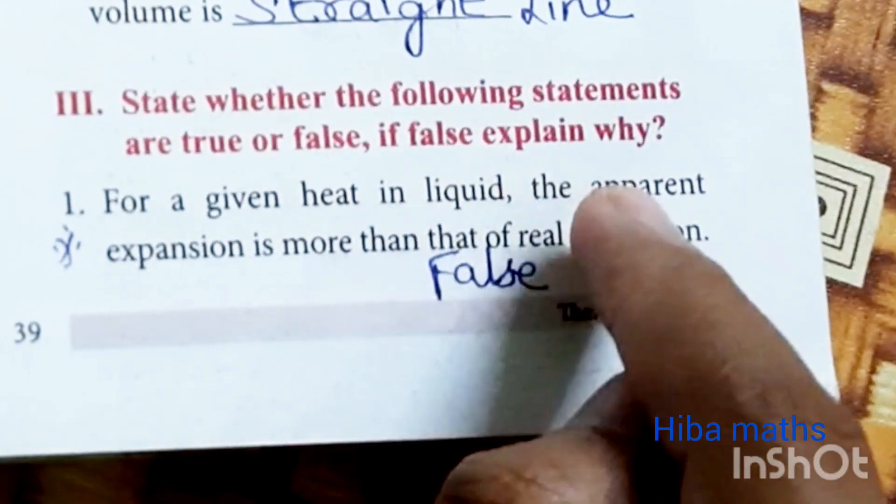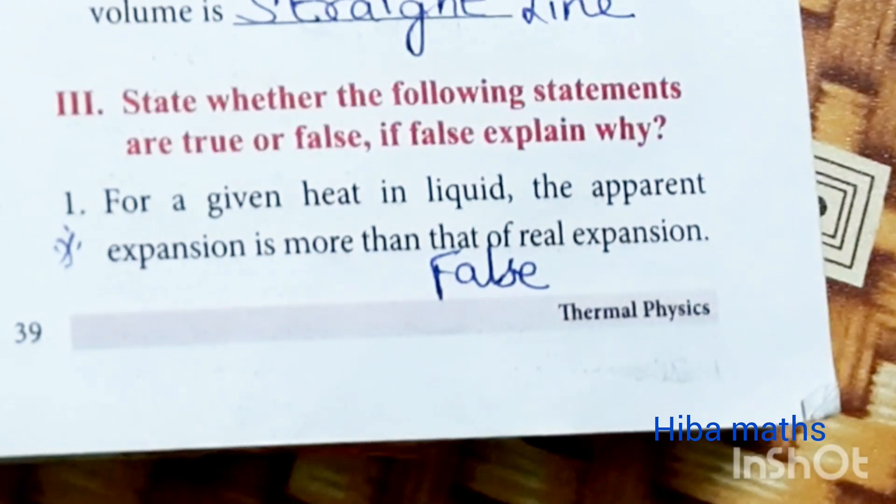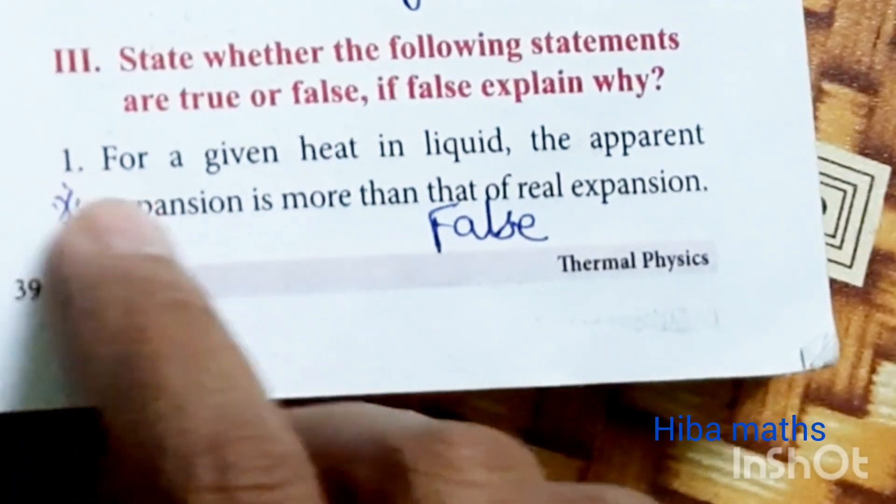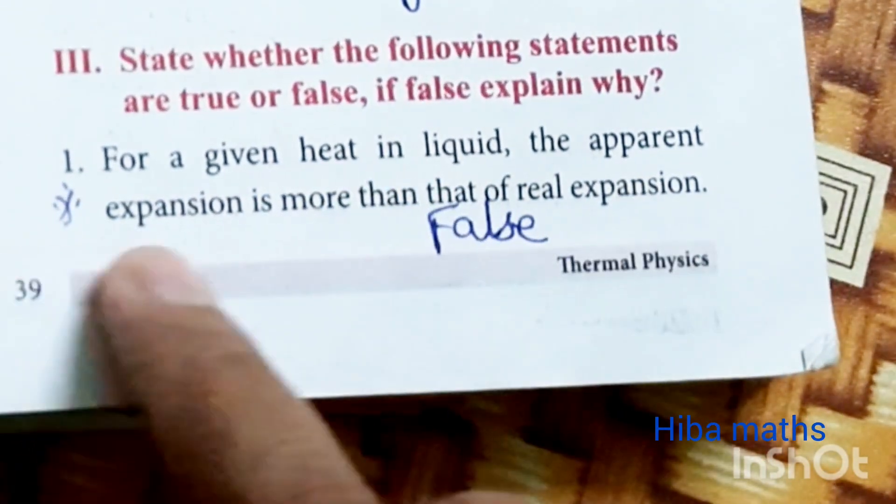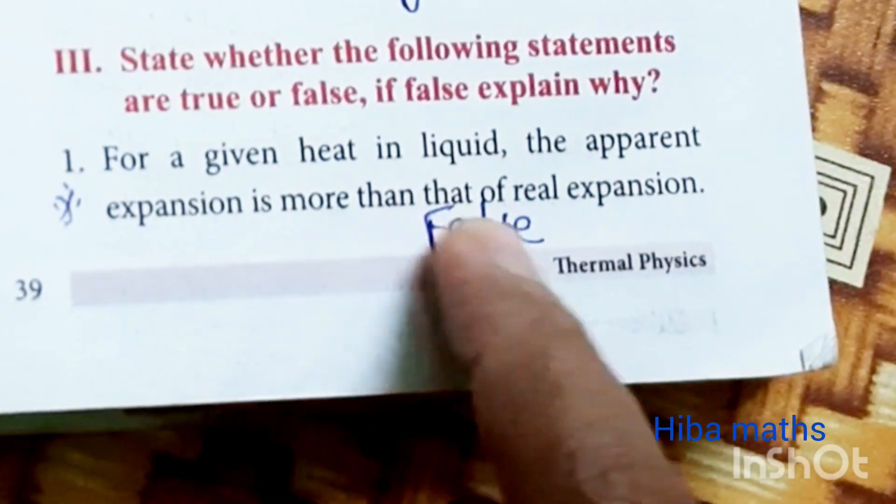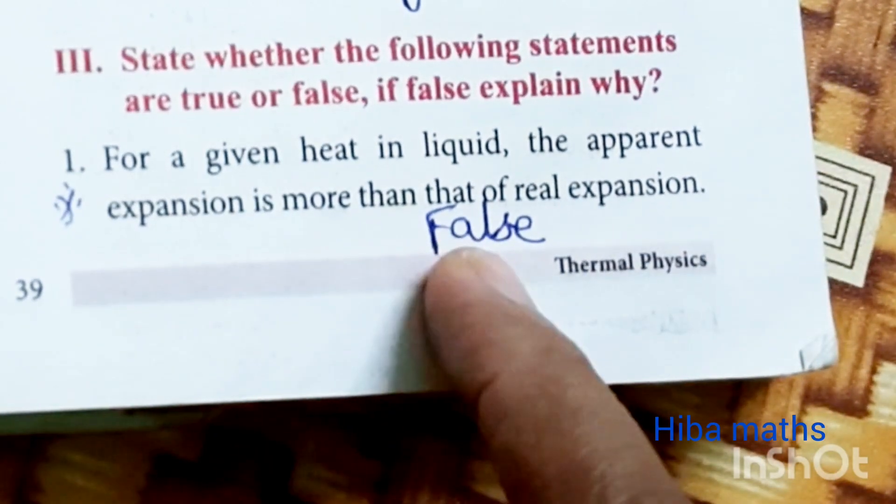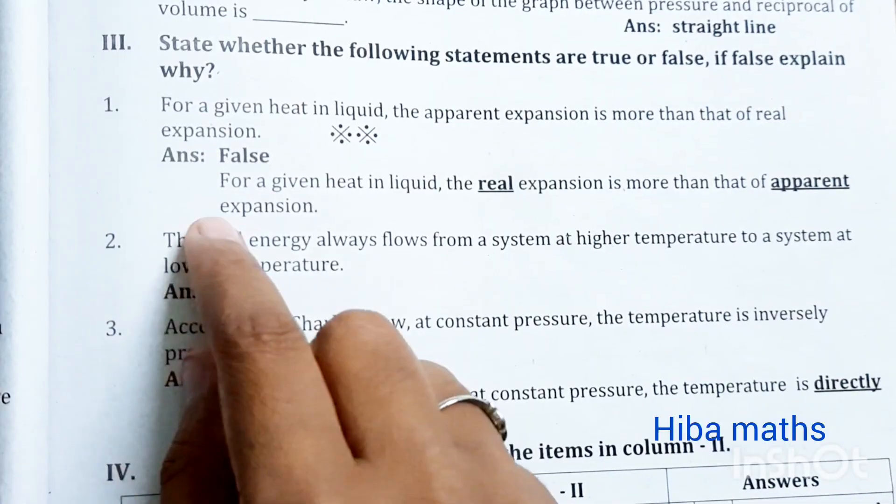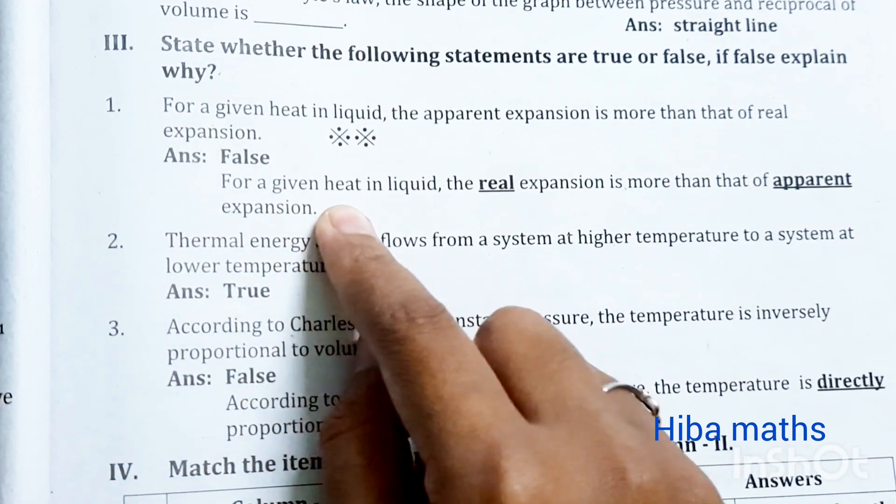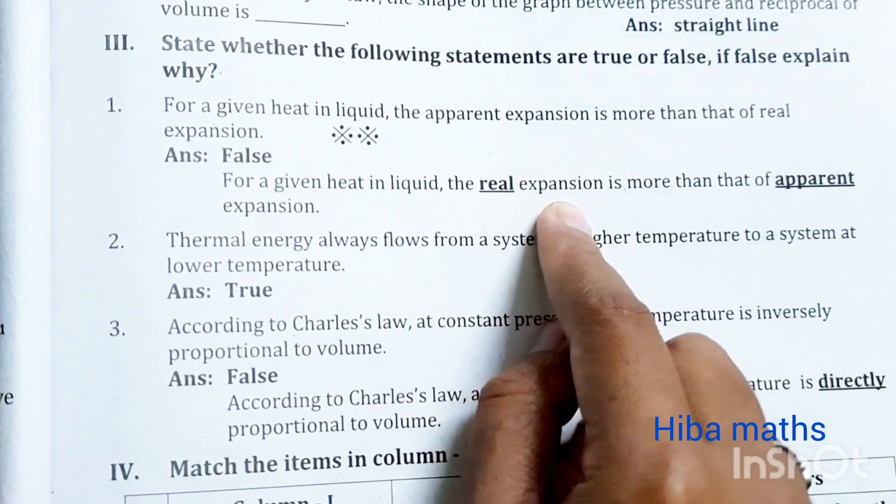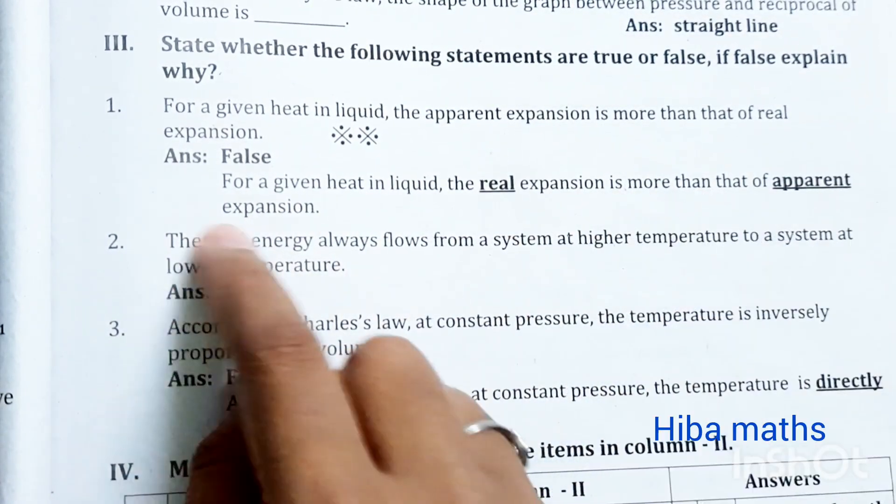State whether the following statements are true or false. If false, explain why. For a given heat in liquid, the apparent expansion is more than that of real expansion. False. Reason: for a given heat in liquid, the real expansion is more than that of apparent expansion.